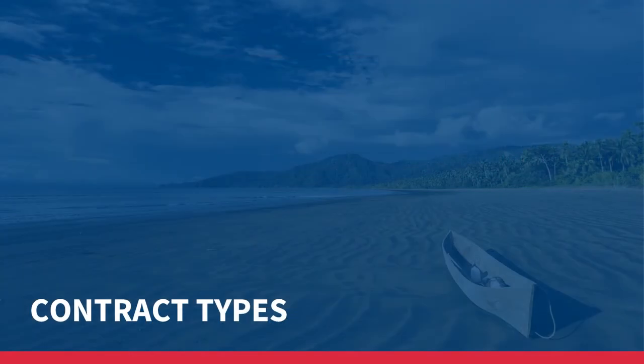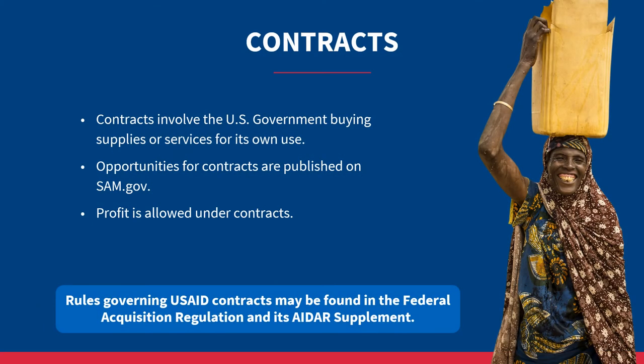Now that we have discussed general information about USAID awards, let us go into more detail about contracts and the rules associated with them. Contracts involve the U.S. government buying supplies or services from contractors for its own use — this can be a purchase or lease. Examples of supplies or services range from pens and paper, information technology, printing, and health services, to construction of a health clinic, technical assistance, and training.